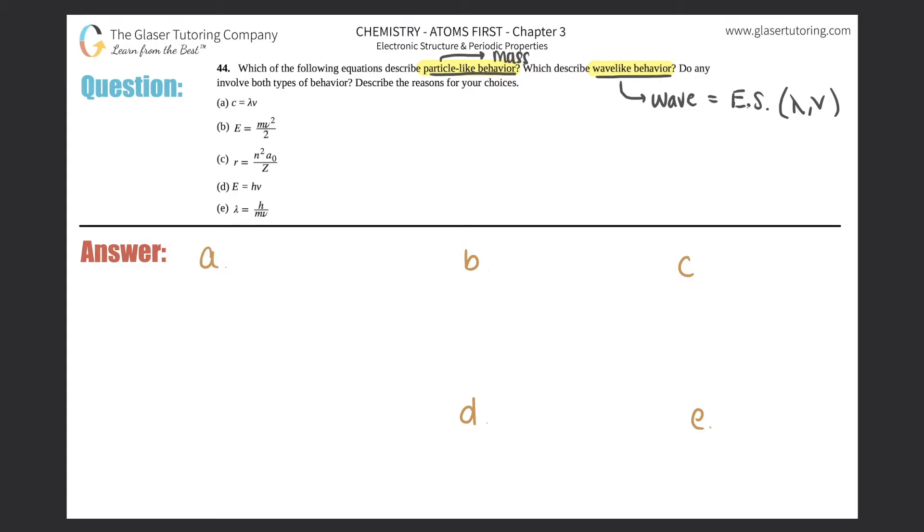Particle-like behavior is a mass, so that would be M. Sometimes it could be one, sometimes it'll be the other, and sometimes you could have both. So let's see.